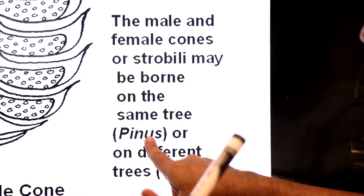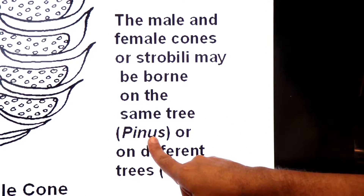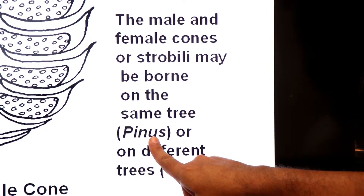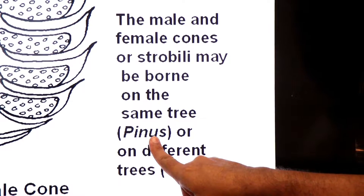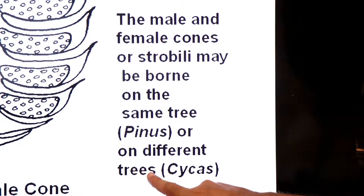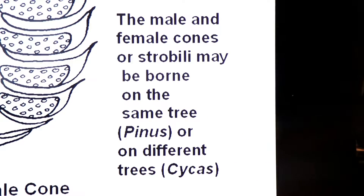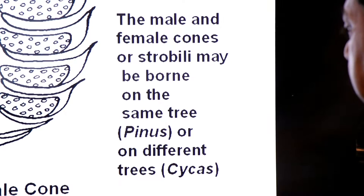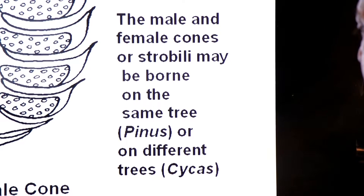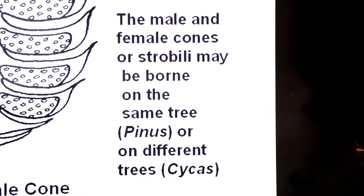Pinus is monoecious — on the same plant, on different branches, both male and female cones are found. Cycas is dioecious — male cone alag Cycas plant pe aur female cone alag Cycas plant pe hota hai.